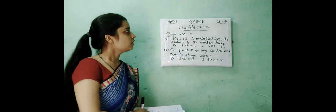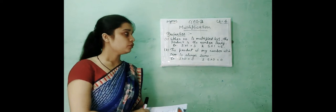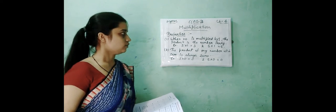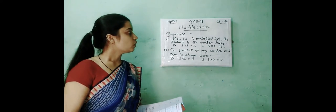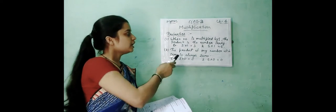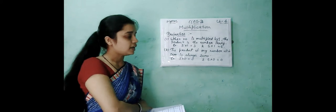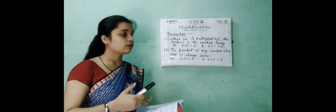Hello and welcome to class third, chapter 4 multiplication. Here the first part of multiplication properties of multiplication I explained today. Your first property is when a number is multiplied by one, the product is the number itself. Here is the example: 3 into 1 is equal to 3, and 5 into 1 is equal to 5. When we multiply by one, we get the same number.